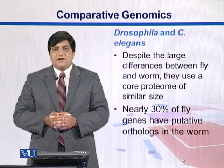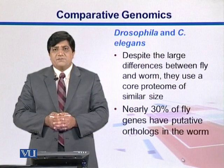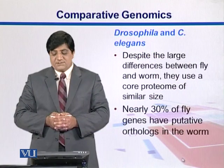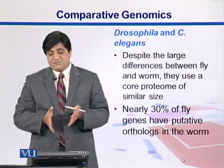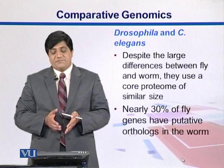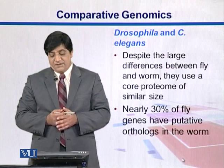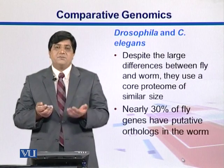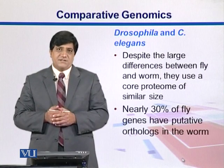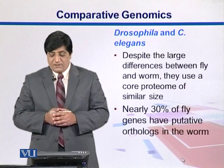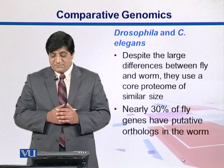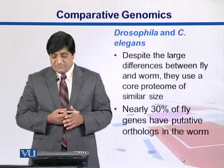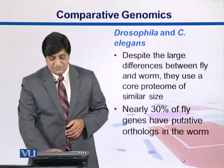If we compare the fly Drosophila with the worm C. elegans, we see that despite the larger differences between them, the core proteome is of similar sizes. Nearly 30% of the fly genes have orthologues in the worm.